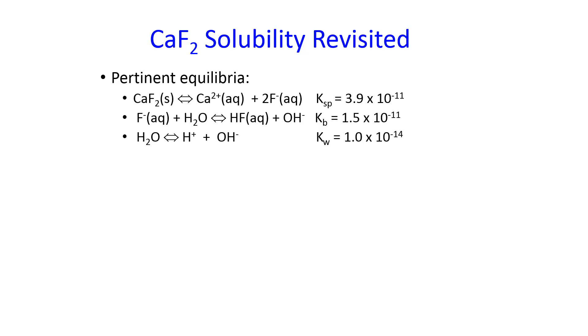We can look back at the calcium fluoride solubility revisited. The first step is to write the pertinent equilibria. We had two, and there's technically a third — depending on whether our concentrations are low enough — which is the water ionization. The other two are obviously pertinent because the calcium fluoride and related species participate in them. We can write a charge balance.